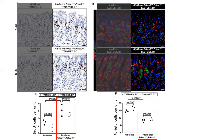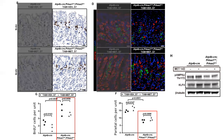Parietal cells are shown here in red. These changes, though modest, were statistically significant. Metformin treatment of mutants was not able to normalize parietal cell size nor nuclear localization, features associated with parietal cell maturity. Furthermore, western blot analysis displays increases of KLF4 with metformin treatment, supporting it as an AMPK target.